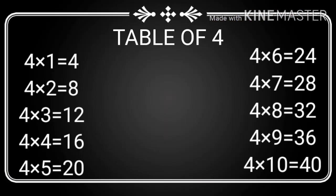Okay children, now let's move to the next table, that is Table of 4. Let's learn Table of 4: 4 ones are 4, 4 twos are 8, 4 threes are 12, 4 fours are 16, 4 fives are 20, 4 sixes are 24, 4 sevens are 28, 4 eights are 32.